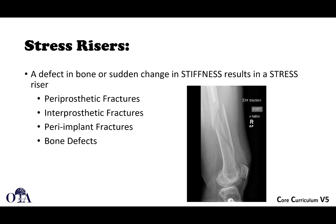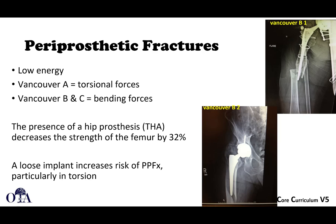Let's talk about stress risers. A defect in bone or sudden change in stiffness results in a stress riser. At the end of an intramedullary stem, for example, there's a sudden change in stiffness where you have bone and metal, and then suddenly less stiffness beyond that. Periprosthetic fractures, interprosthetic fractures, and peri-implant fractures — meaning a fracture next to a fracture implant, not necessarily a prosthetic joint replacement — use those terms carefully. A bone defect such as a cyst or a metastatic lesion can also result in a stress riser.